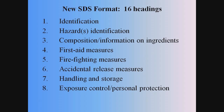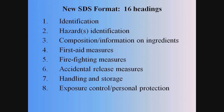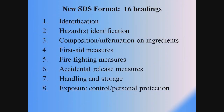The new standardized SDS format will make finding hazard and chemical information on the SDS easier for both employers and employees. There is no set format to the material safety data sheet, and they can range in length from one page to 20 or more pages. The new safety data sheet will contain only 16 headings, and all SDS will be in this standard format, which will make it easier for all of us to find the information that we need. The SDS headings, sequence, and content are similar to many items required by other regulatory organizations.